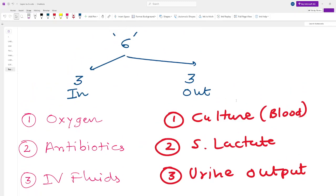What does the 6 mean? I've divided it into 3 in and 3 out. The 3 going inside the patient: number one is oxygen, the patient should be started on oxygen. Number two, broad spectrum antibiotics. And the third is IV fluids. So 3 in: oxygen, antibiotics, and IV fluids.